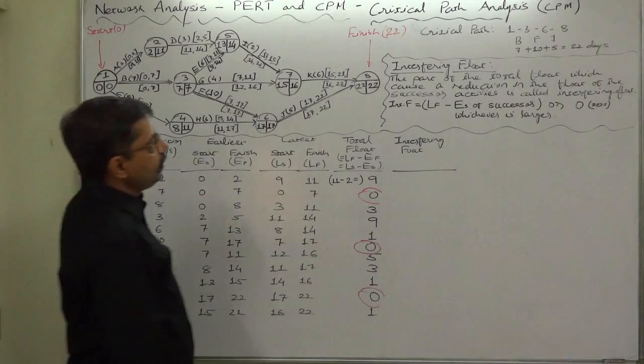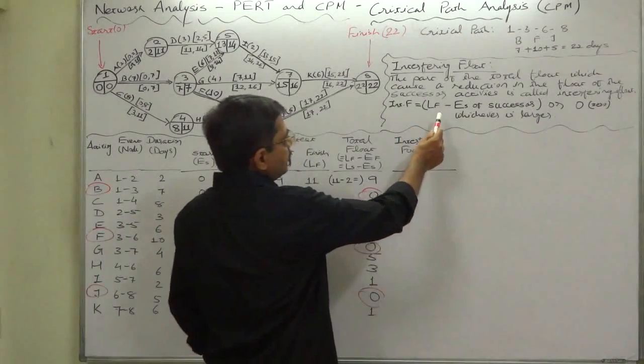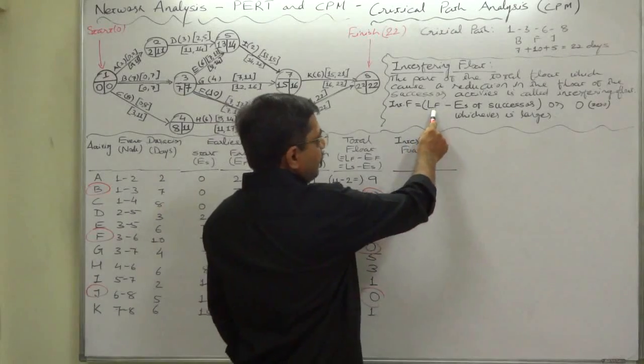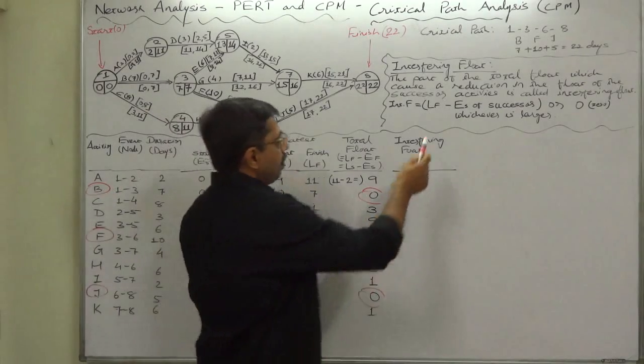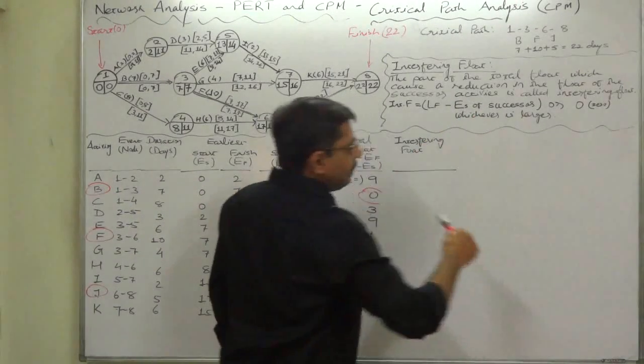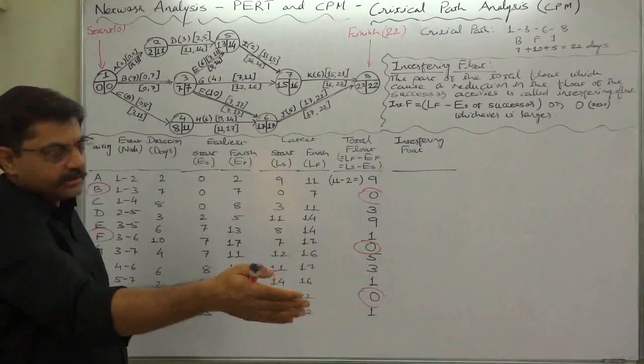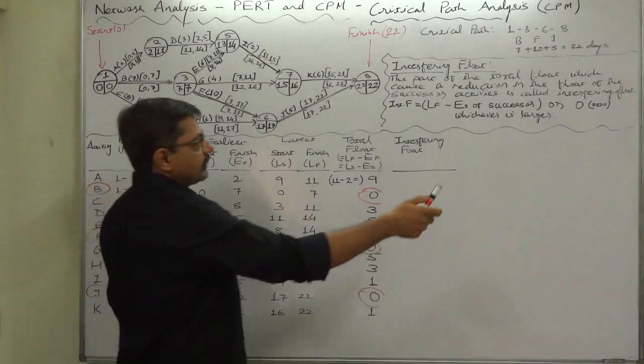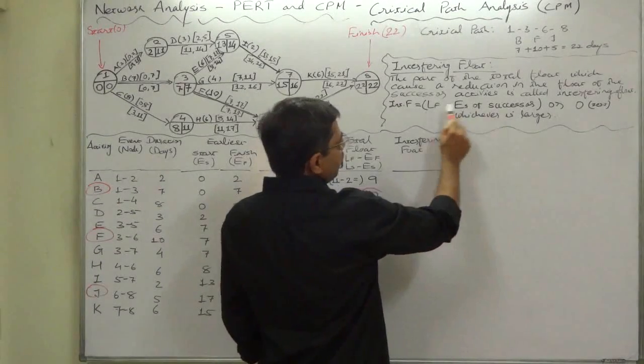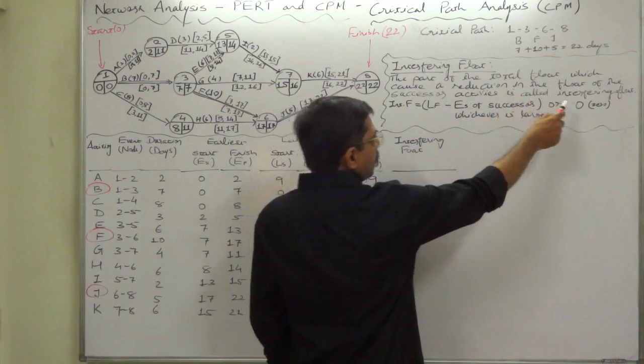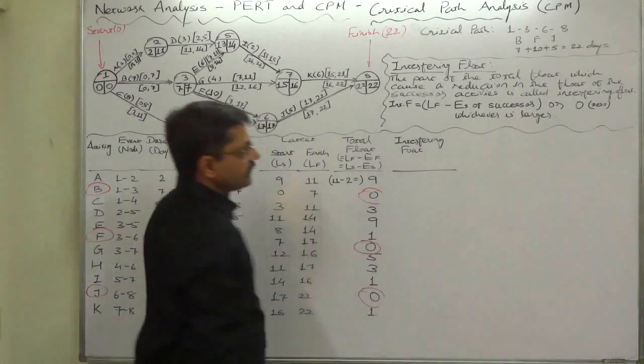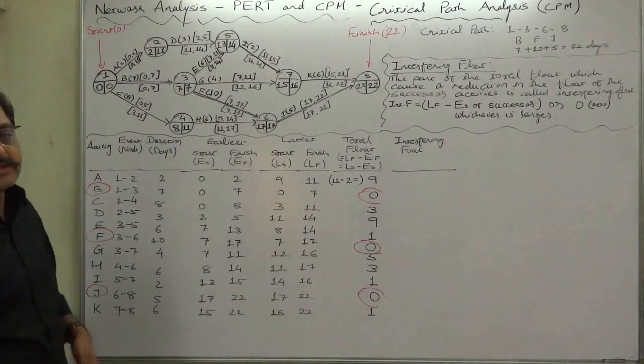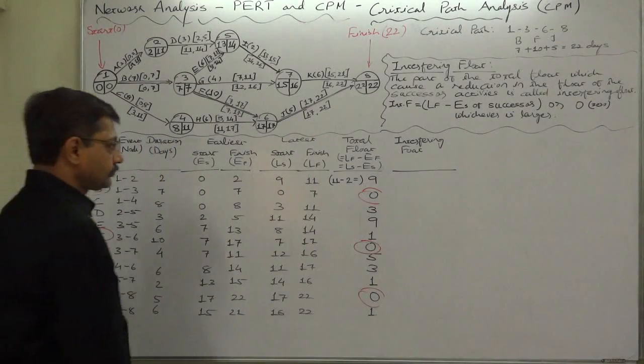The formula of interfering float is: latest finish time of the activity under consideration, the present activity, minus earliest start time of the successor activities. The difference between these two or zero - compare the difference with zero and select whichever is larger. That means it can never be negative.